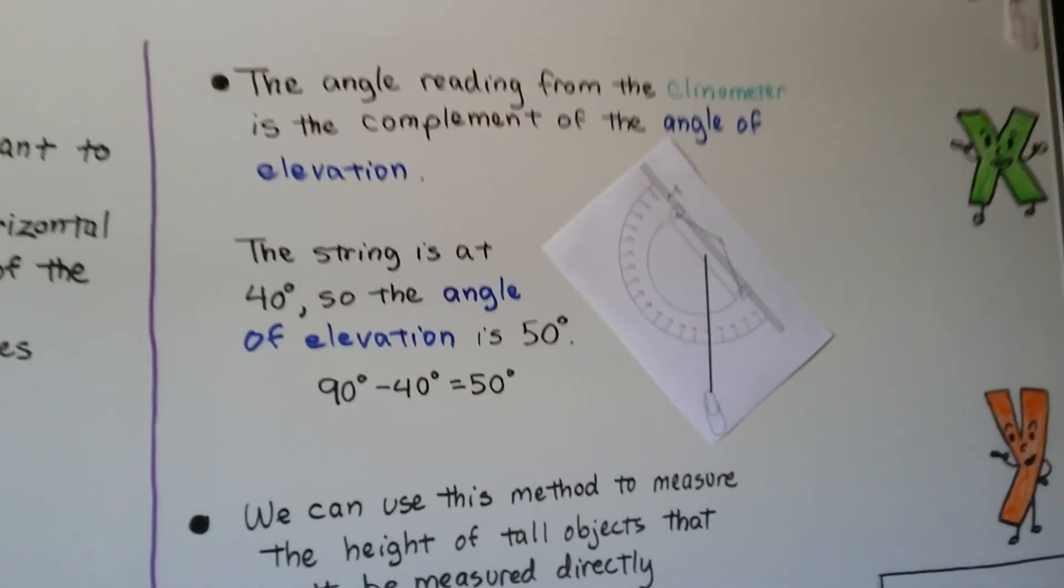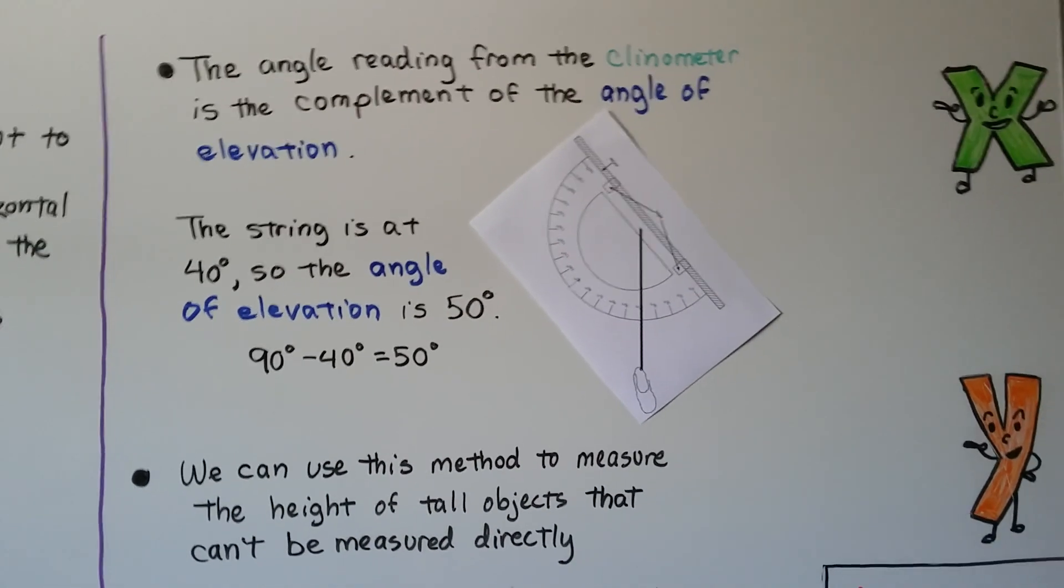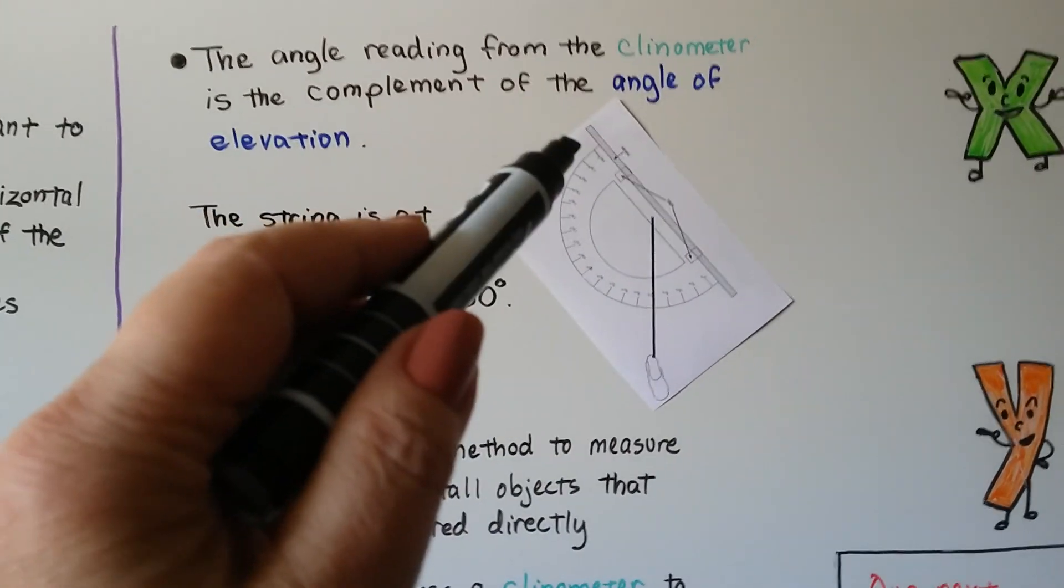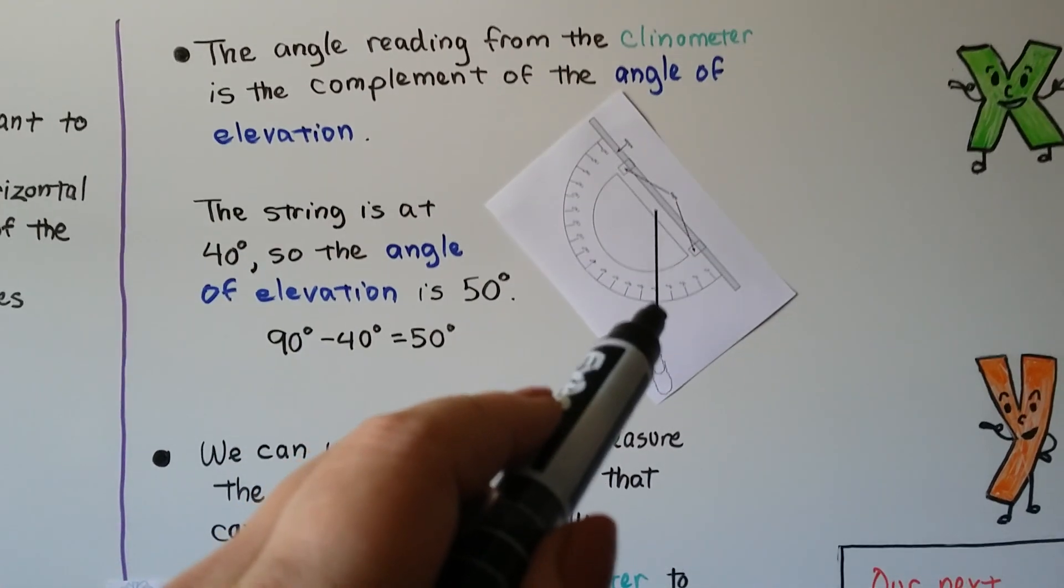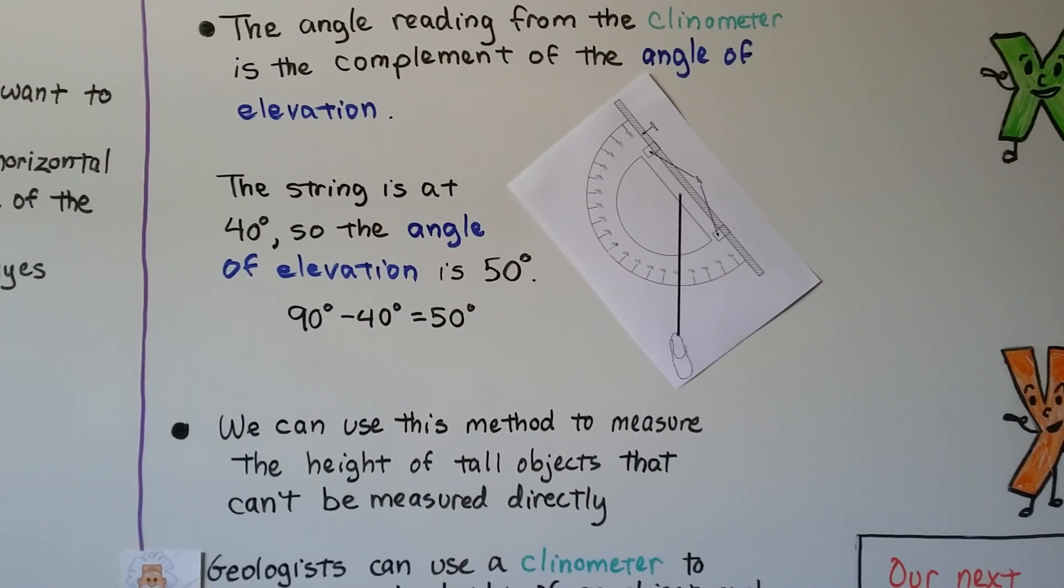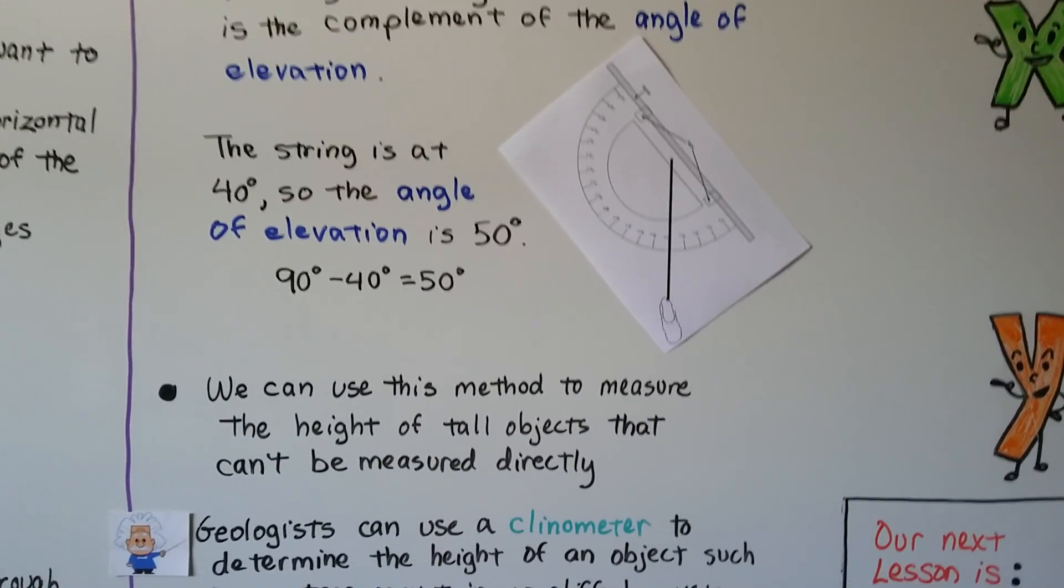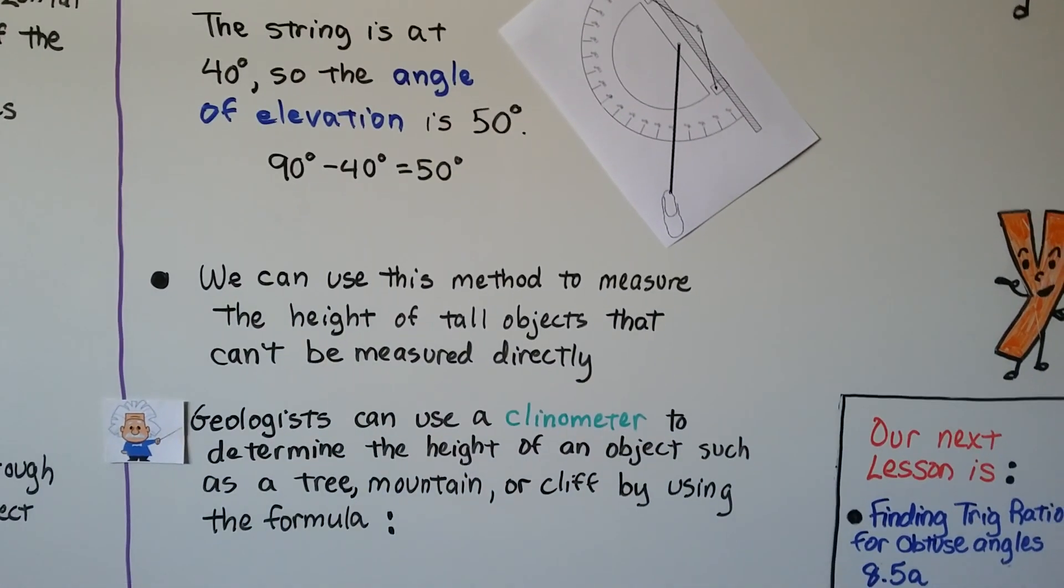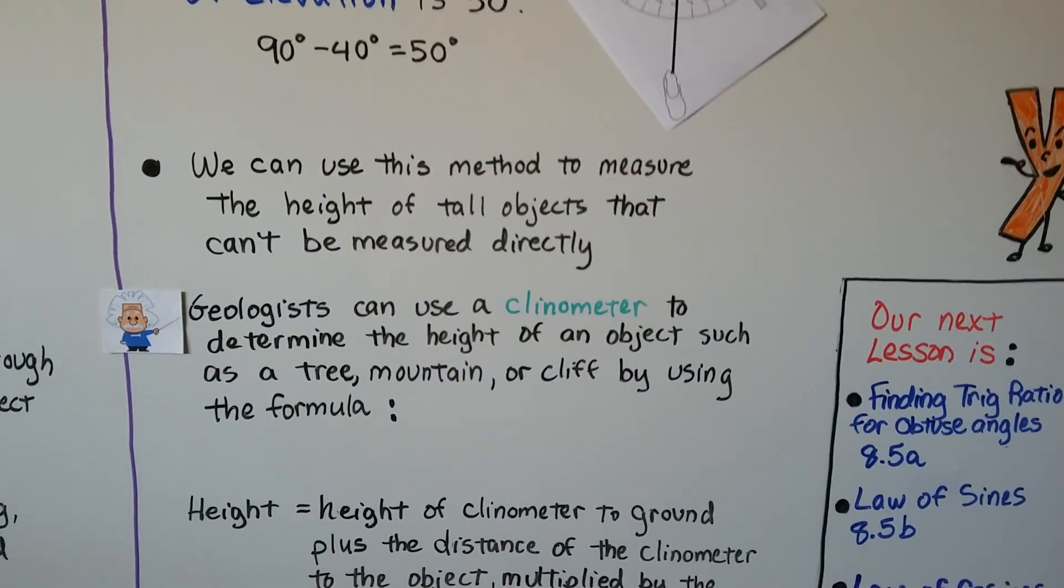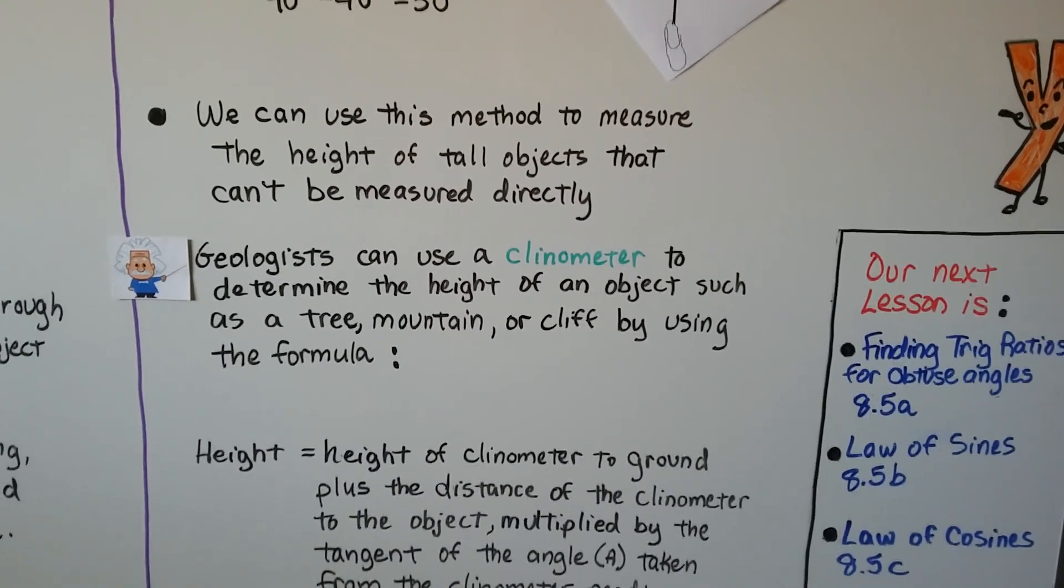The angle reading from the clinometer is the complement of the angle of elevation. So if we're looking through the tube or the straw and the string is at 40 degrees, well then the angle of elevation is 50 degrees. Because remember complements are a sum of 90 degrees. And we can use this method to measure the height of tall objects that can't be measured directly. So we're doing an indirect measurement.